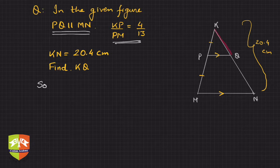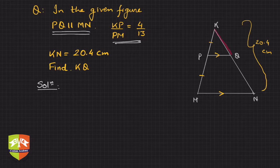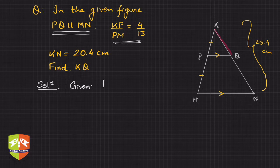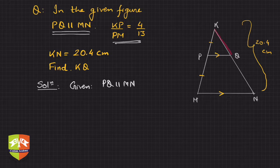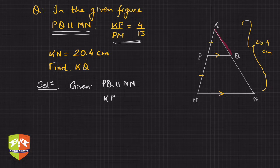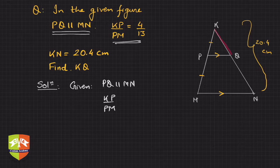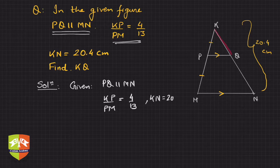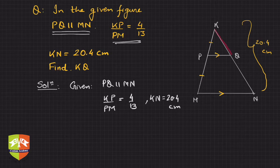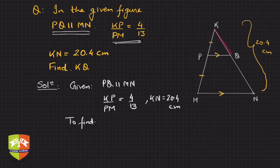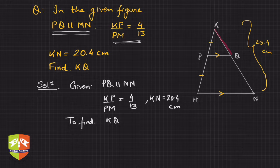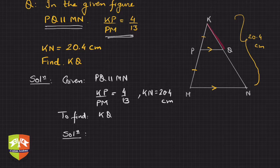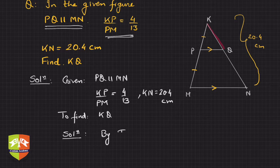So let's start the solution. You have to write 'Given': PQ is parallel to MN. Though it's mundane work to repeat the same thing, it's always good practice to record all the given facts. You can also write KN is equal to 20.4 centimeters. 'To find': what is to be found out is KQ. Now, solution. How to solve it? You can write 'By Thales Theorem' or 'By BPT,' Basic Proportionality Theorem.